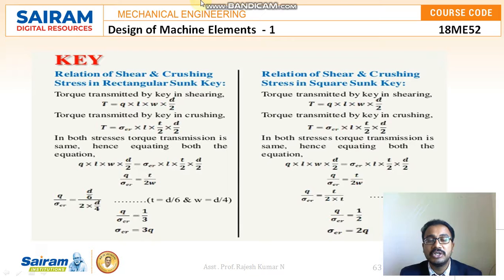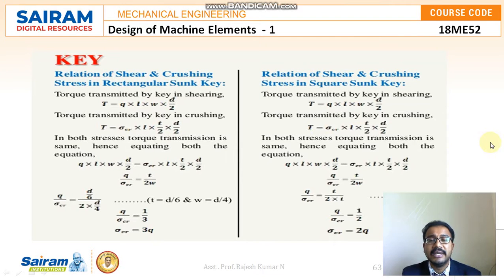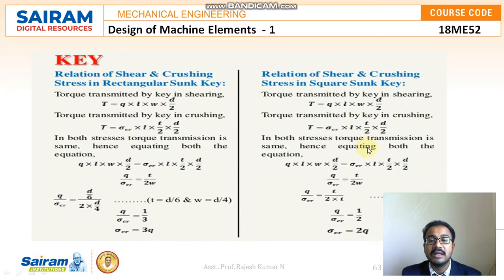Similarly, for the shear and crushing stress relationship in the square sunk key: the torque transferred by the key in shearing is T = τ × l × w × (d/2), and the torque transferred in crushing is T = σ_cr × l × (t/2) × (d/2). Since both torque transmissions are the same, equating them: τ × l × w × (d/2) = σ_cr × l × (t/2) × (d/2), and cancelling common components.